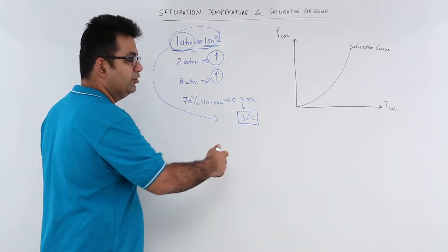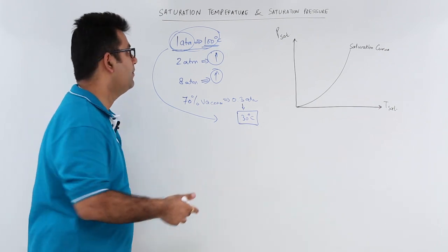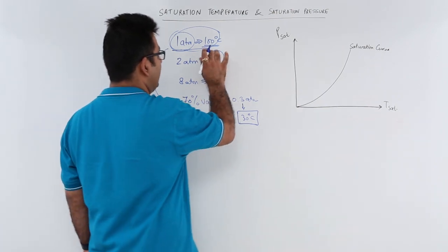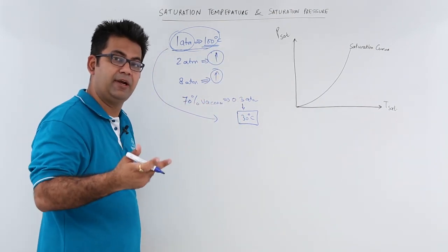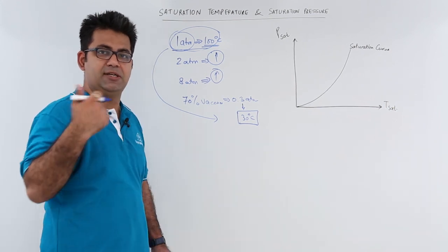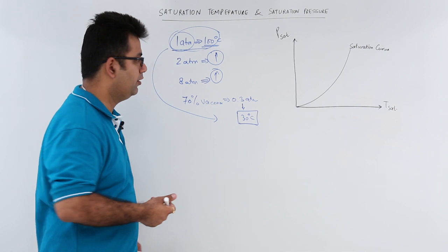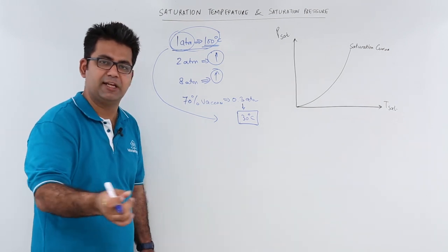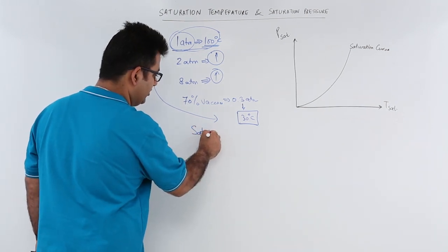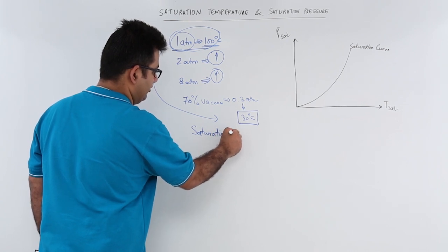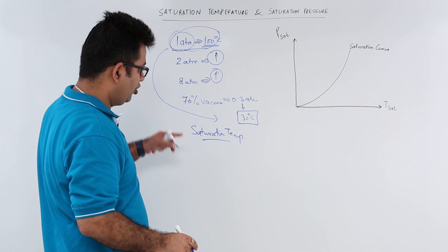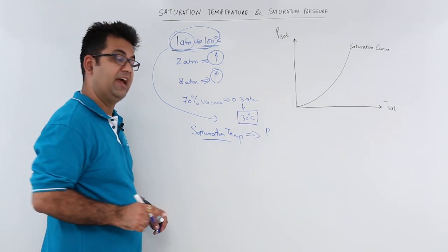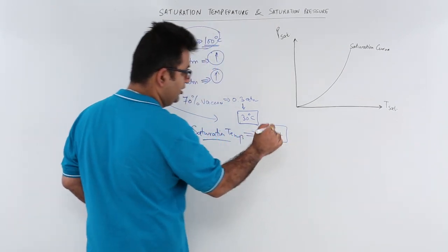So you can see how the boiling point varies by varying the pressure at which boiling takes place. The temperature at which boiling or condensation takes place is called the saturation temperature. Corresponding to every saturation temperature, you have a value of pressure, and we call this value of pressure the saturation pressure.